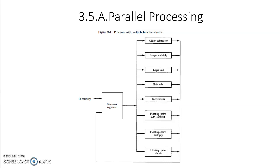At a higher level of complexity, you need multiplicity of functional units. Parallel processing can be seen as distributing the data among multiple functional units — for example, ALU: arithmetic, logical, and shift units. ALU is a centralized functional unit which can do arithmetic, logical, and shift operations, but only one at a time. If you have to do three different operations — one arithmetic, one logical, one shift — you cannot do all three with the ALU simultaneously. You must wait for each to finish before starting the next. This wait can be removed if the functional unit is decentralized.